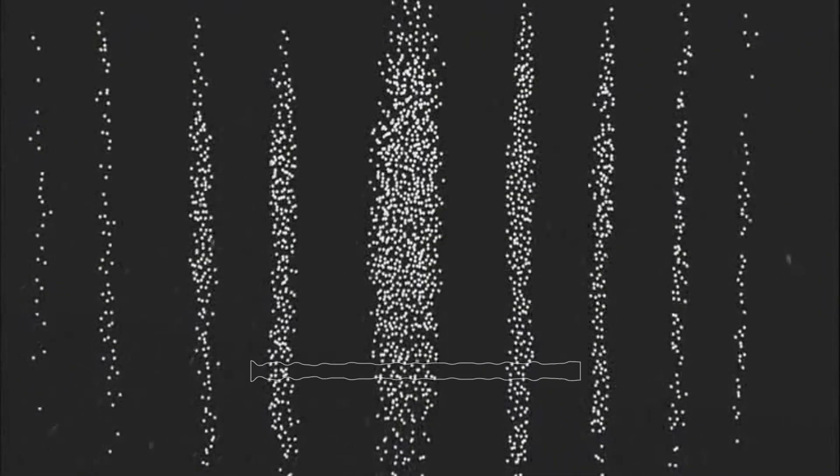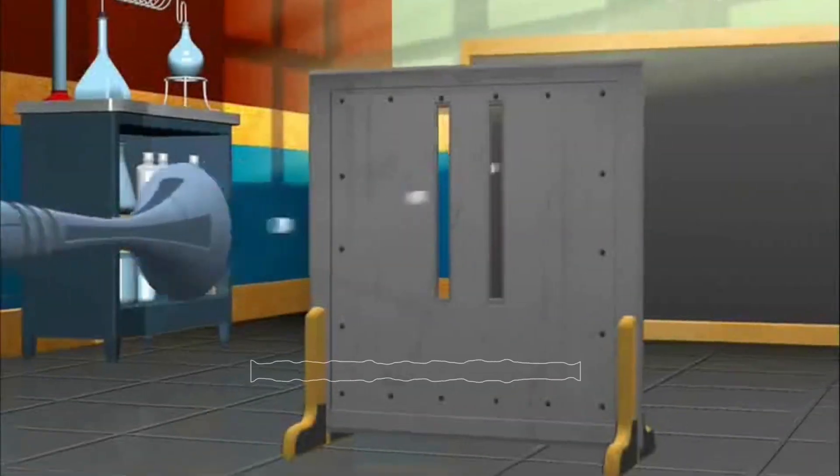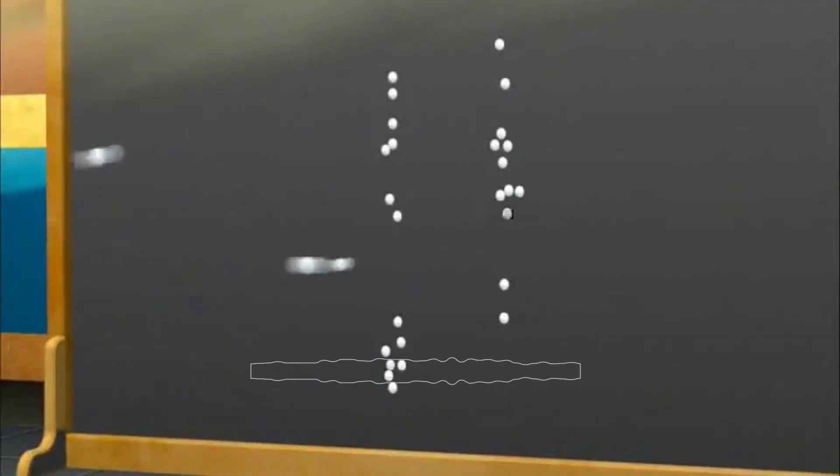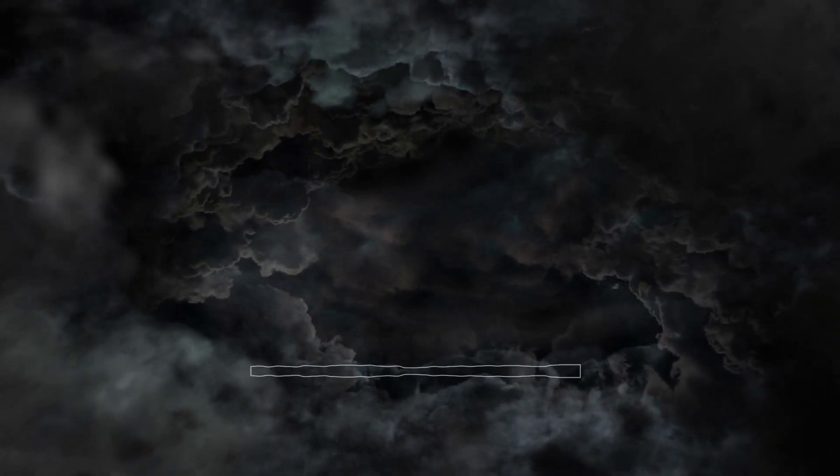But this is not what actually happens. When the experiment is conducted with particles being fired through the slits one by one, one would expect to observe two distinct bands on the screen corresponding to the two slits. However, what actually happens is that an interference pattern emerges, a series of alternating dark and light bands reminiscent of waves interfering with each other.